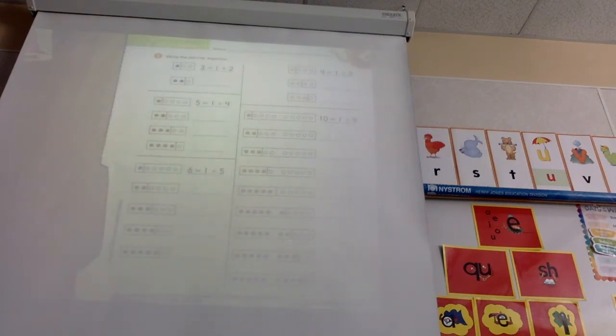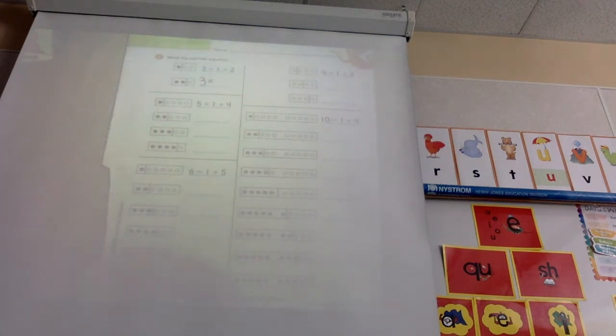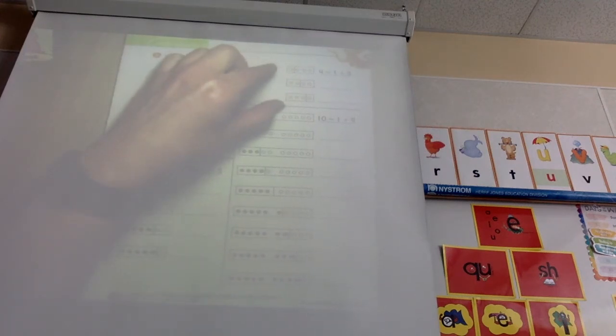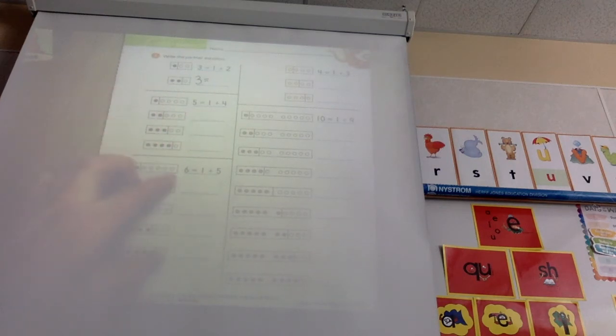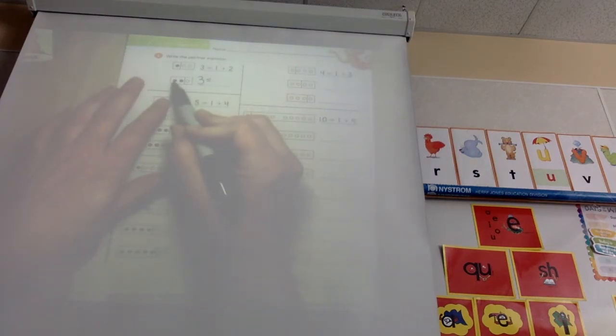So we're going to look at this next one. They want us on this page to write the number it equals first. So I'm going to write the three and do you guys all see how it's got these little lines throughout? It's telling you that this whole area is three, this whole area is four, five, six, and ten. So we don't have to count the total, we can just look at what section it is. But now I'm going to look and see how many dots are blue.